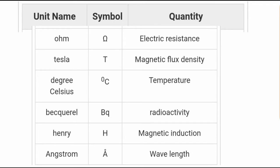Magnetic flux density is tesla, T. Temperature is degree Celsius. Radioactivity is becquerel, Bq. Magnetic induction is henry, H. Wavelength is angstrom, A. It is very important.